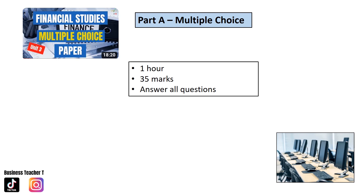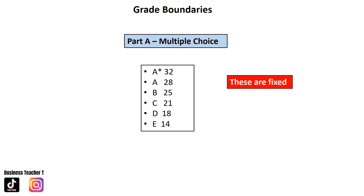If you need more practice on the Multiple Choice, do check out the links in the description box. The grade boundaries for your Multiple Choice are fixed. So as soon as you finish your assessment you're given a score out of 35 — for example, a score of 26 would mean you have a B.